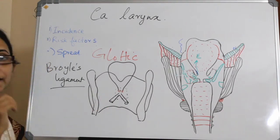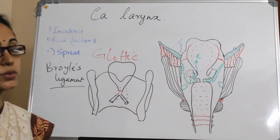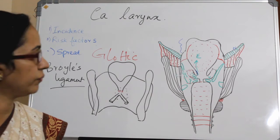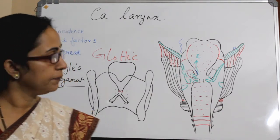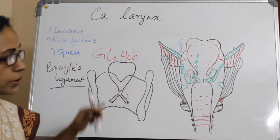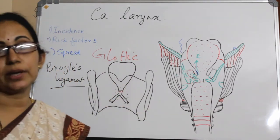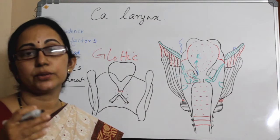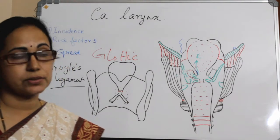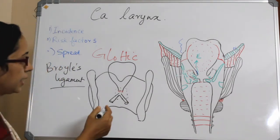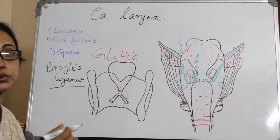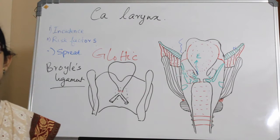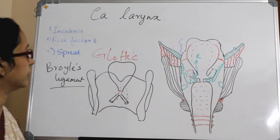Broyle's ligament acts as a barrier to the spread of malignancy. And the glottis can be divided again into two subsites: the anterior commissure and the vocal cord.